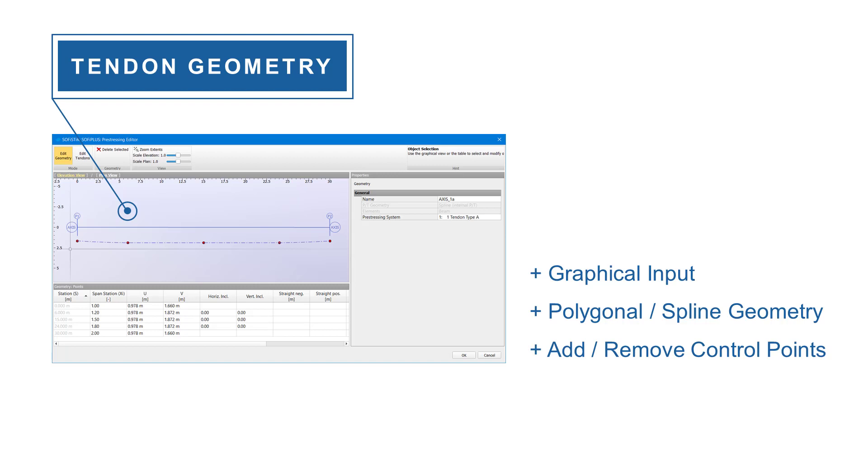For instance, you can add and remove control points to the duct geometry, set properties to the tendon such as jacking procedure, the direction of stressing and construction stages. After completing the input in the tendon editor, the tendon geometry gets generated in your model.